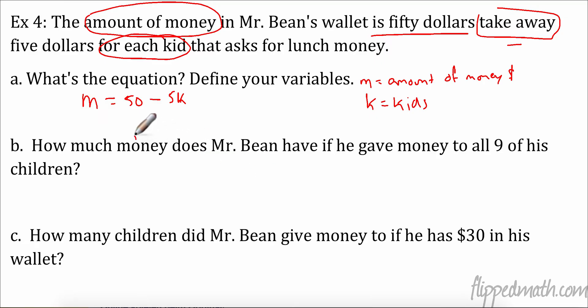Now we can use this equation that we've come up with the model of the situation and solve some stuff. How much money, so we're going to solve for M, does Mr. Bean have if he gave money to all nine of his kids? So K in this situation is nine. I think it's a really big help to circle these and tell you what variable they are. Now it's easy to solve. I know I have M equals 50 minus 5 times K is 9 in this situation. So now I'm just evaluating. So I have subtraction and I have multiplication. I have to do multiplication first. So 5 times 9 is 45. 50 minus 45 is 5. And it's always good to have a label. So he's going to have $5 in his wallet.